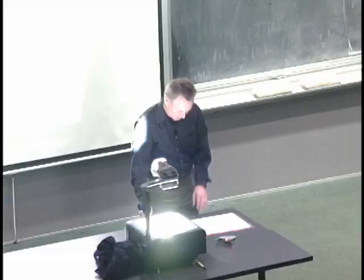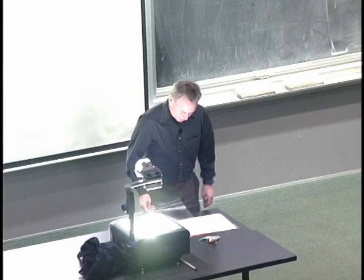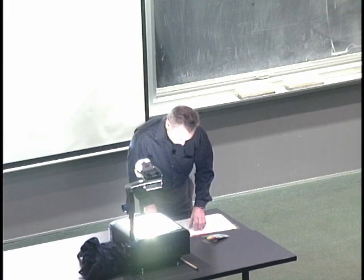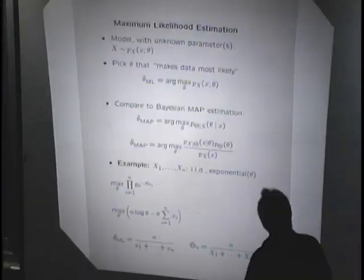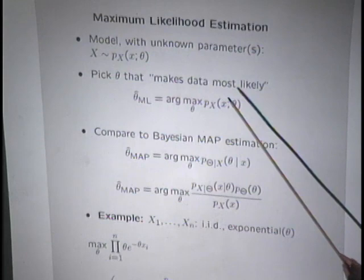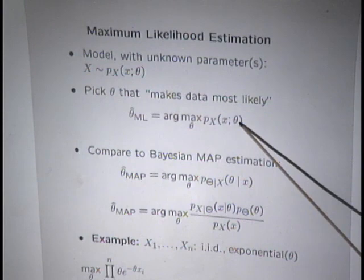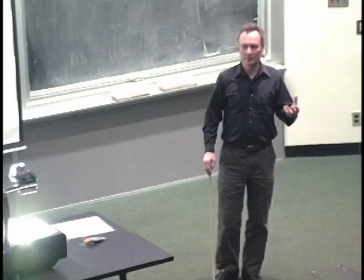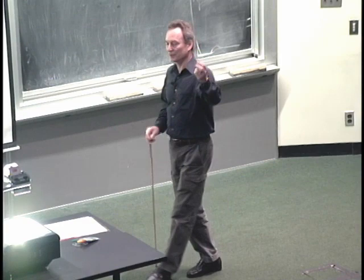One general approach is to pick the theta under which the data that we observe are most likely to have occurred. I observe x. For any given theta, I can calculate the probability that the observed x occurred under that theta. I just choose the theta which makes the data that I observed most likely.